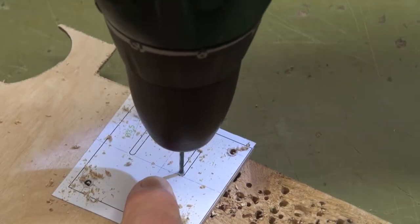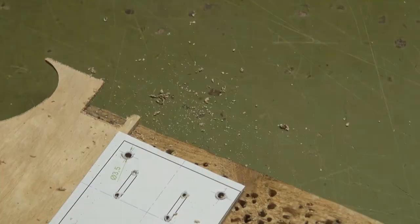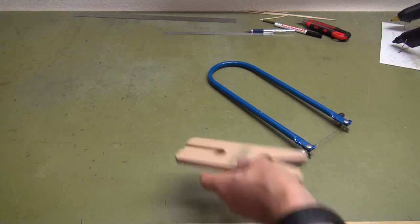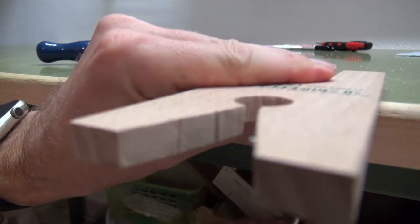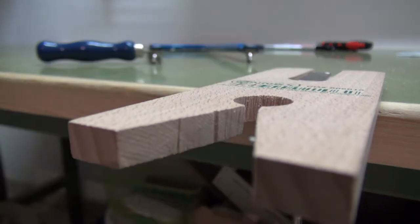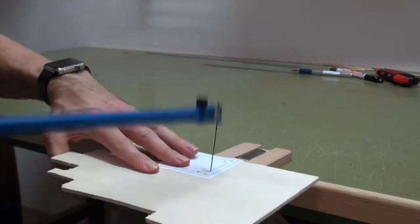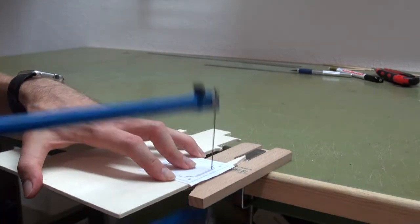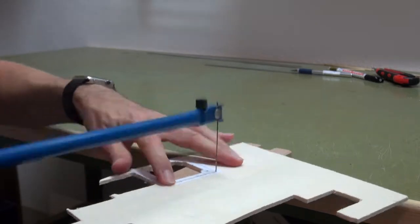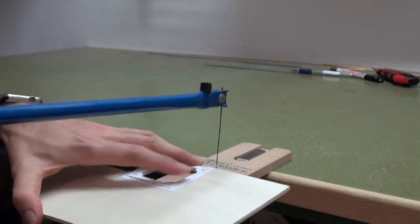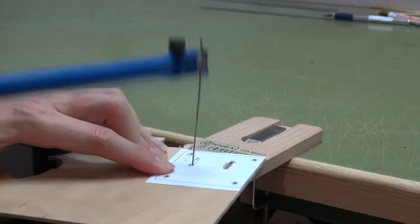Also drill a hole at each end of the slots using a 2mm drill. Let's grab your jigsaw to cut out the two pieces.